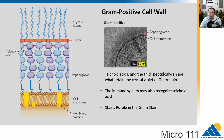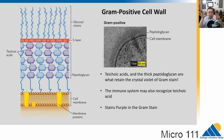The gram-positive has a thick wall, a single membrane, and a big layer of peptidoglycan. There are also molecules called teichoic acids, which help bind this thick peptidoglycan together. Our immune system actually recognizes teichoic acids, so it can distinguish gram-positives from gram-negatives. This thick wall retains the crystal violet in the gram stain, so the bacteria stains purple and stays purple.